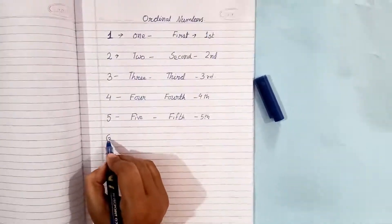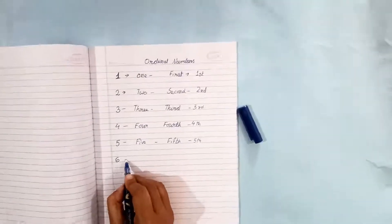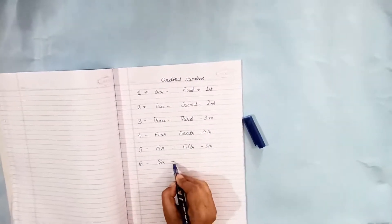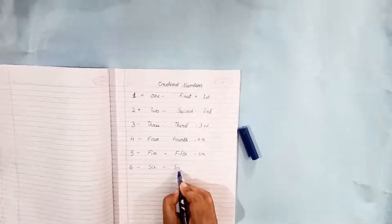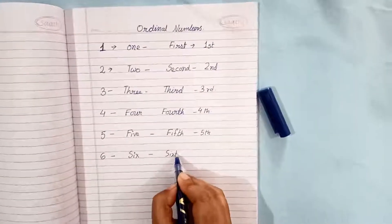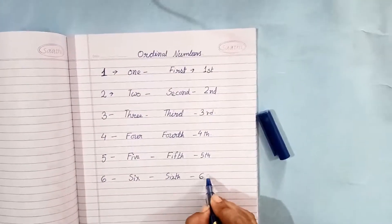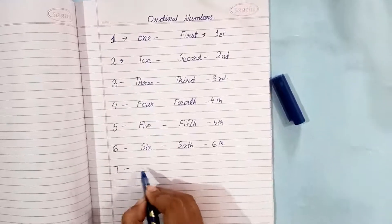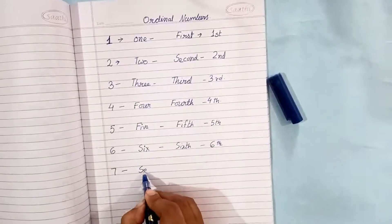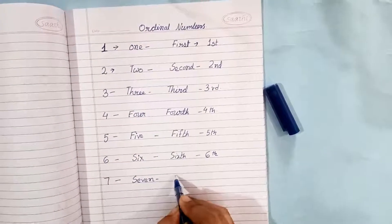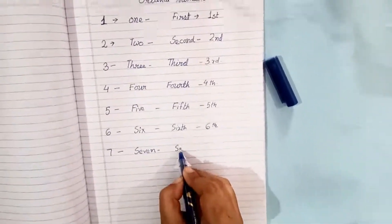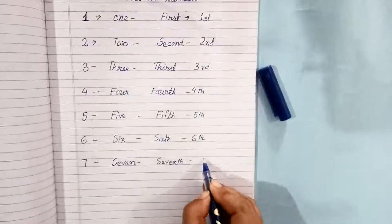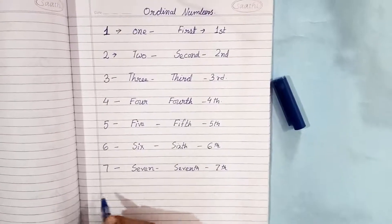Now, next one is sixth. This is in normal, it is called sixth. In ordinal, sixth. In number, sixth. Seventh. Seventh, seven. In number, seventh.